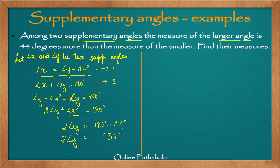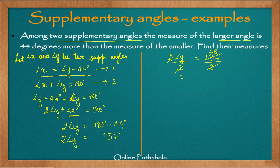Twice of angle Y is 136 degrees. Now we need to find angle Y, and we can do that by dividing both sides by 2. So twice of angle Y divided by 2 equals 136 divided by 2. The 2s cancel out, and 2 times 6 is 12, 2 times 8 is 16, so we have 68 degrees. Angle Y is 68 degrees.